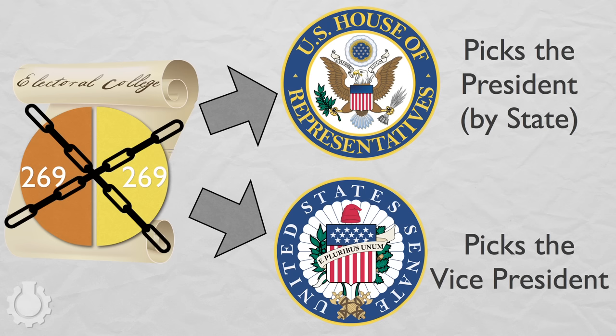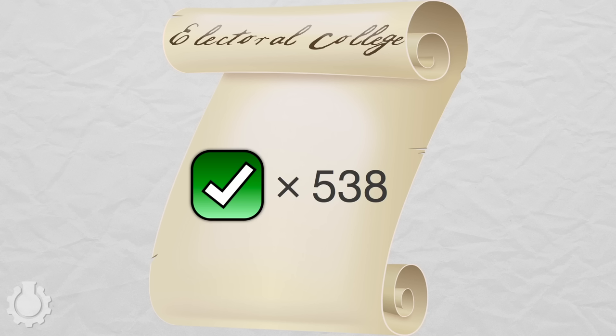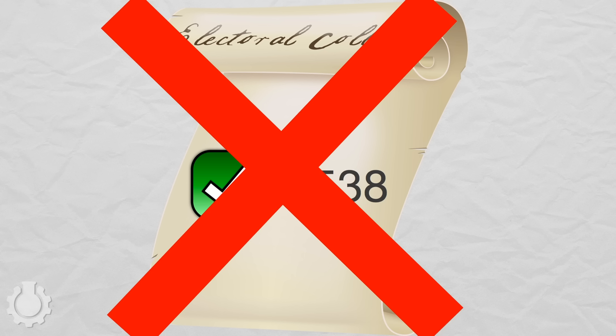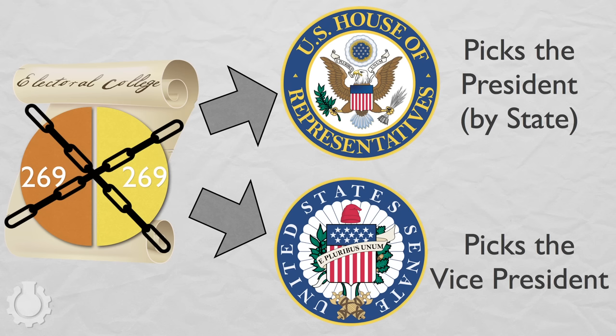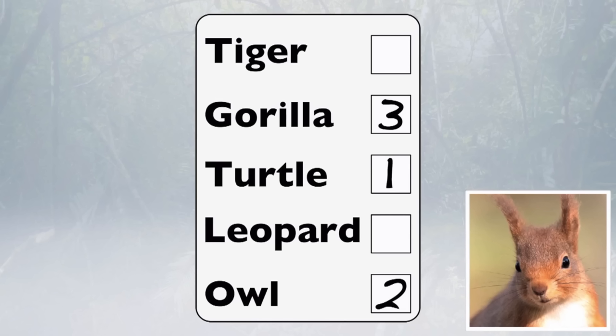But if neither the House can pick the president nor the Senate can pick the vice president, then the Speaker of the House becomes acting president until either branch of Congress picks someone. And that's how the United States would resolve a tied race for president — though it might be faster, and more fair, to just flip a coin. Of course, you could get rid of the Electoral College and instead have a national popular vote, perhaps with something fancy like preferential voting. But maybe that's just a crazy idea.